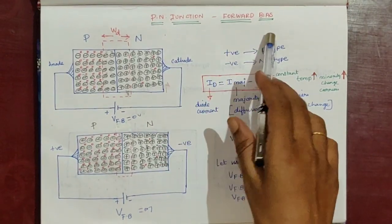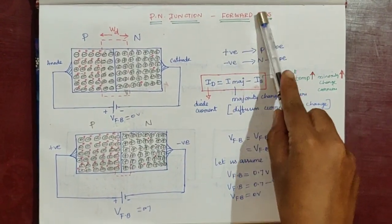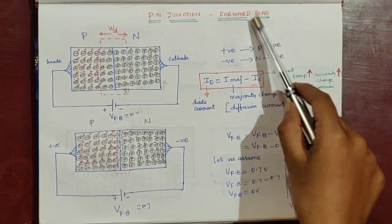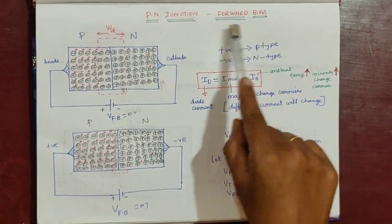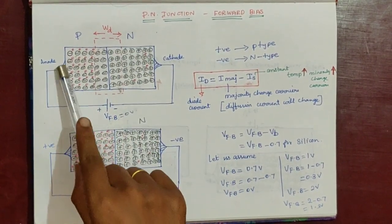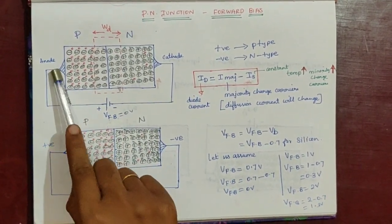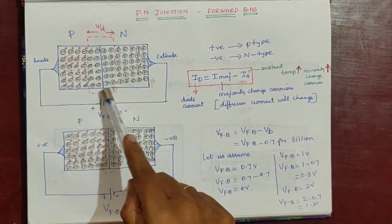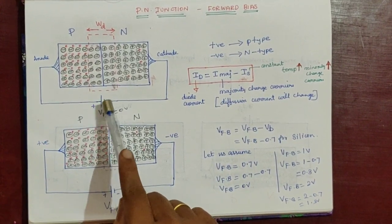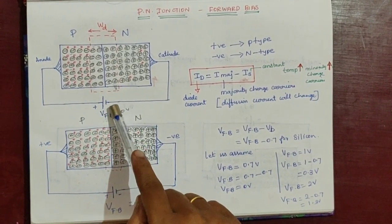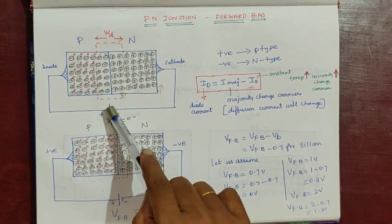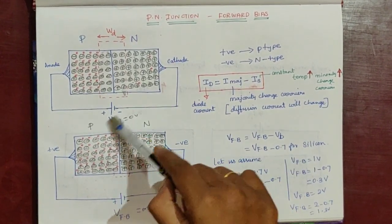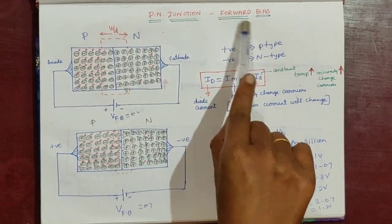PN Junction Diode Forward Bias Condition. First, what is biasing? Biasing is applying an external voltage. So, what is forward bias? A PN Junction Diode has two terminal devices: anode and cathode. The anode is the positive terminal and the cathode is the negative terminal. Here is a battery with two terminals — positive and negative. The positive terminal of the battery is connected to the anode, and the negative terminal of the battery is connected to the cathode. This connection is forward bias.